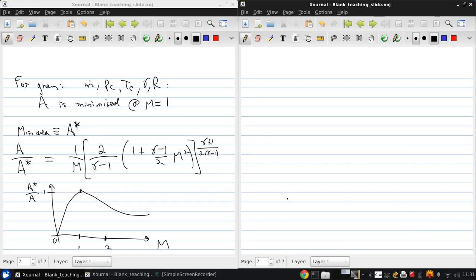So now at last we have everything we need to be able to relate the exit velocity UE and the thrust to the nozzle geometry.